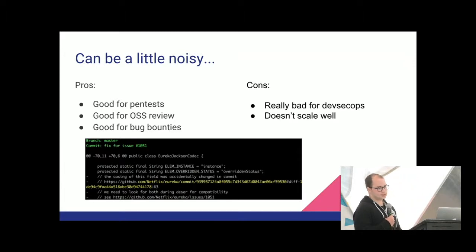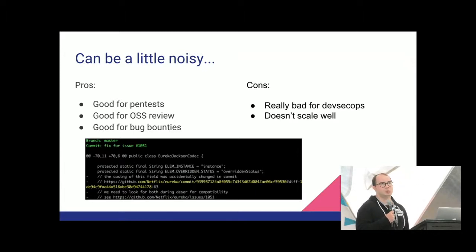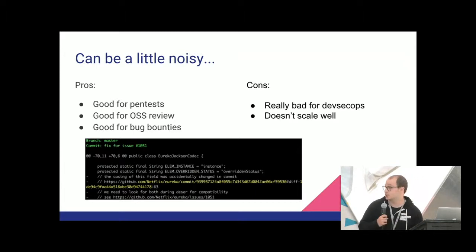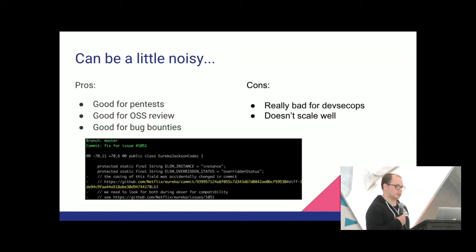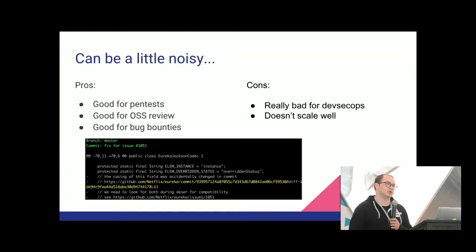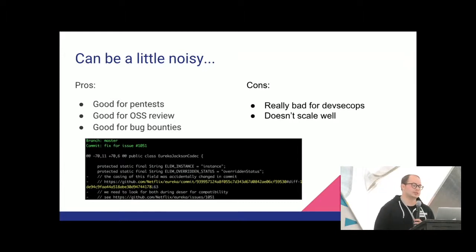Entropy mode is great for pen tests, great for one-time open source reviews, and really good for bug bounties — use TruffleHog on every company you can imagine, you'll probably make some loot out of it. Before open sourcing it, I definitely ran it on some big companies. The cons are you can't stick this in a DevOps pipeline without it flaring on a ton of false positives. There's an example in the same Netflix repository where it flagged on a URL that just has a lot of entropy — a commit hash. A 32-character hex string has the exact same entropy as a Facebook access token, which is also a 32-character hex string. So there are a lot of false positives with this approach.